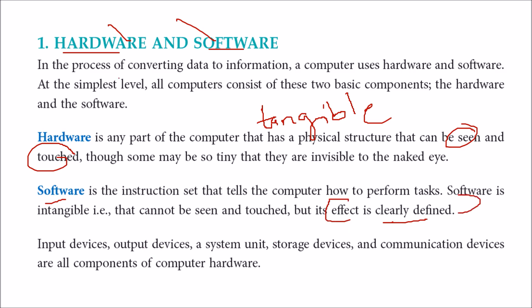In hardware you have input devices, output devices, system units, storage devices, and communication devices. These are all the components of computer hardware. Hardware components can be classified into these different categories.